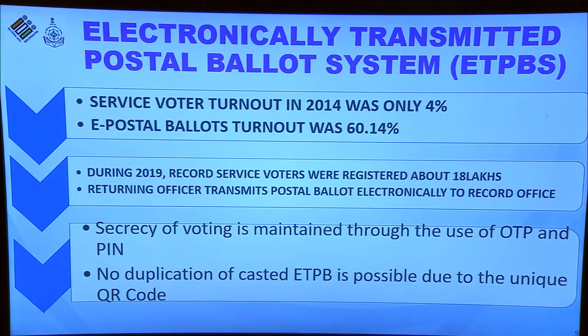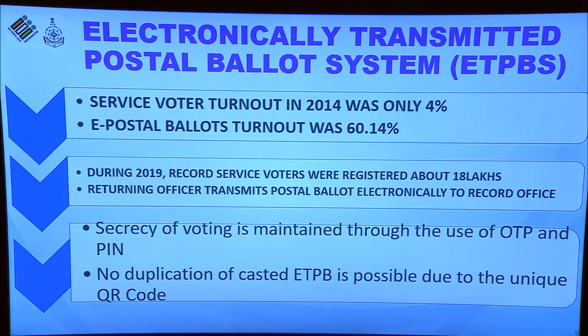During the 2014 elections, the voter turnout of service voters was barely 4 percent. To improve this, the Election Commission introduced the Electronically Transmitted Postal Ballot System (ETPBS). This system enables instant transmission of postal ballots to respective record and unit offices, allowing service voters to cast and post their votes to the returning officer. After its introduction, the turnout during the 2019 elections rose to 60.14 percent, and a record 18 lakh service voter registrations took place.